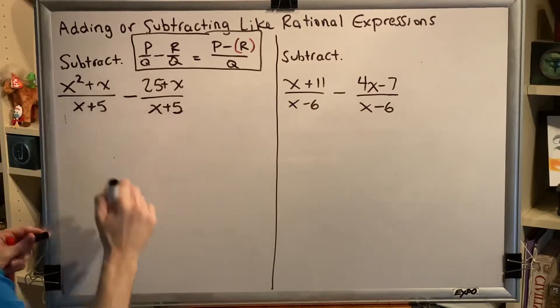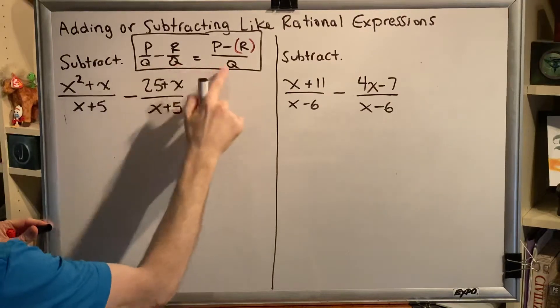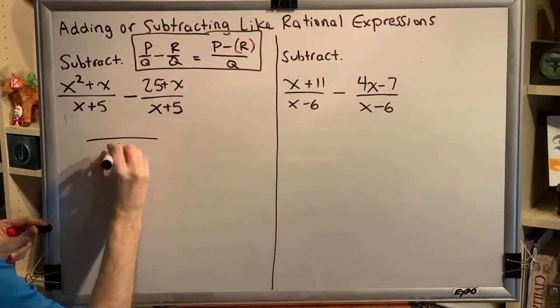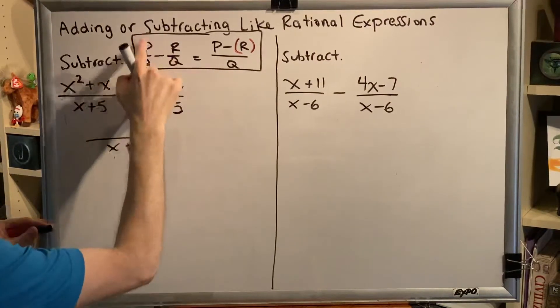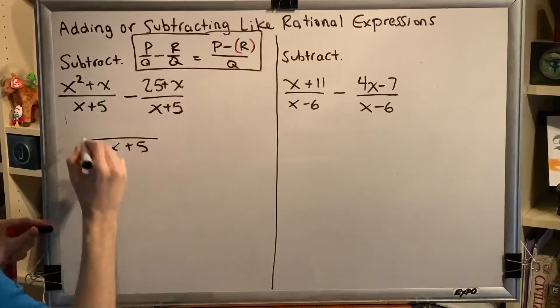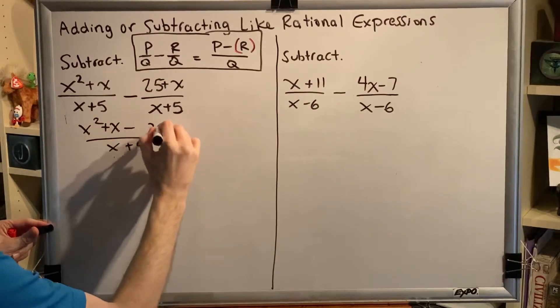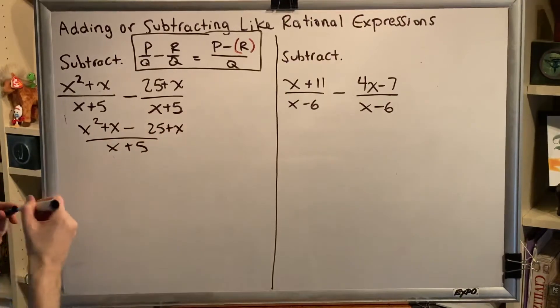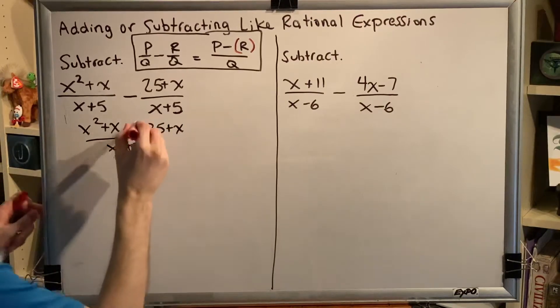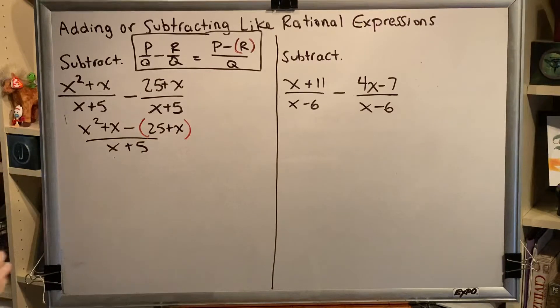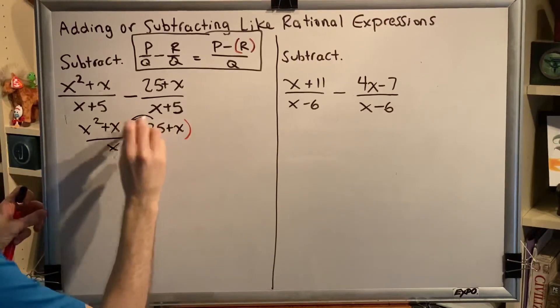The rule for combining these is as follows. Keep the common denominator, subtract the two numerators, and remember the special rule that if your second numerator happens to have more than one term, then the entire numerator must be put in parentheses so that the negative can be distributed to all terms.